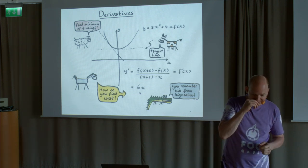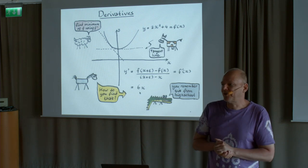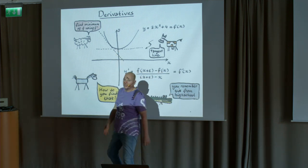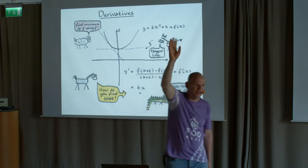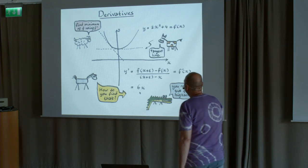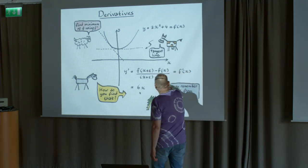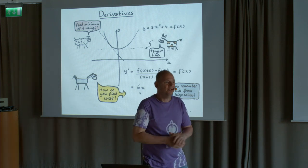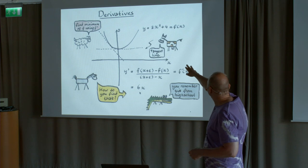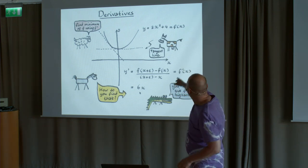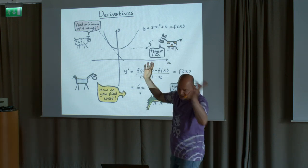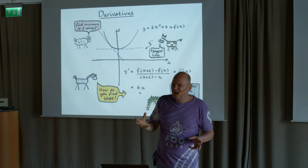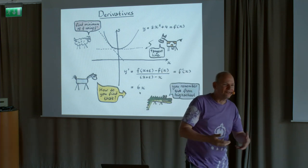I skipped over derivatives. You probably remember from high school finding the minimum of a function — when you throw a ball, when does it have speed zero — and you do that using derivatives. Here's the mathematical definition where epsilon goes to zero. In this case, if I have the function y = 3x² + 4, you take the derivative and get 6x + 0. You all remember that. But did you ever really understand how it worked? You just applied those rules. Let me give you some magic for how we can compute these things automatically.